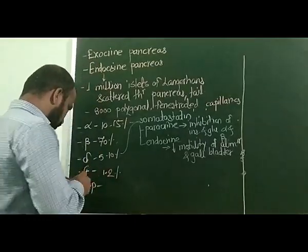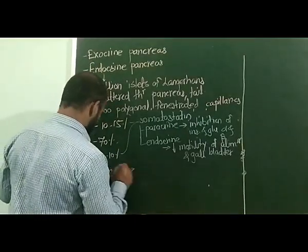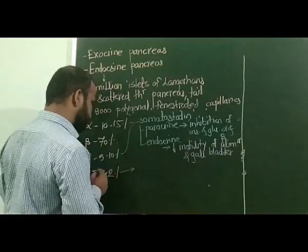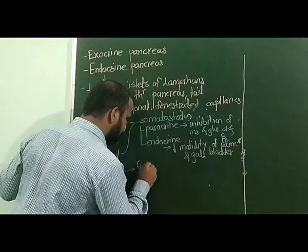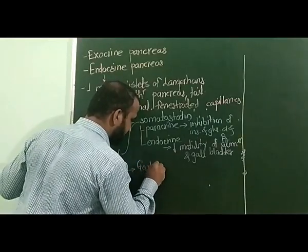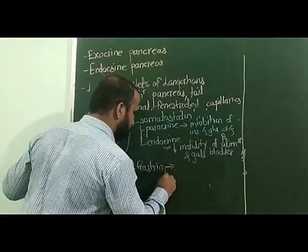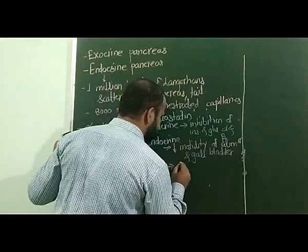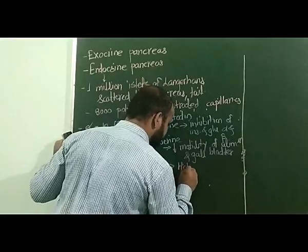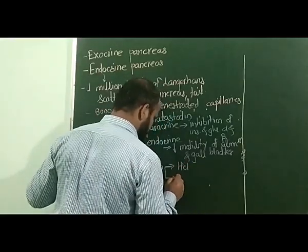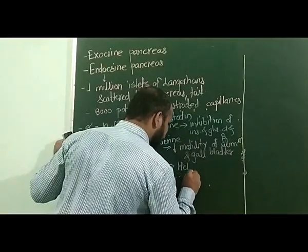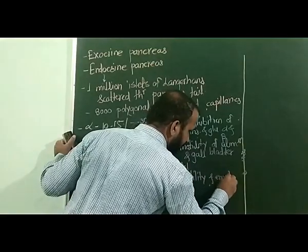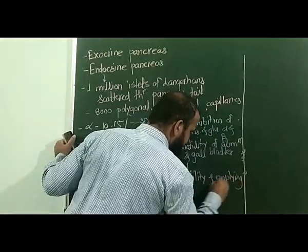The next important cell of the islets of Langerhans is the G cell. This G cell produces the hormone gastrin. Gastrin performs two important functions: it stimulates the gastric glands to produce HCl, and it increases the motility and emptying of the stomach.